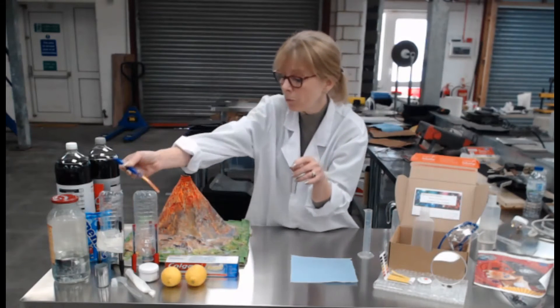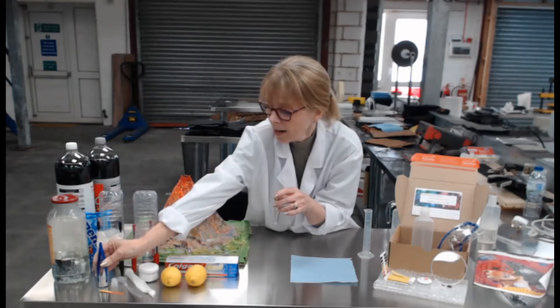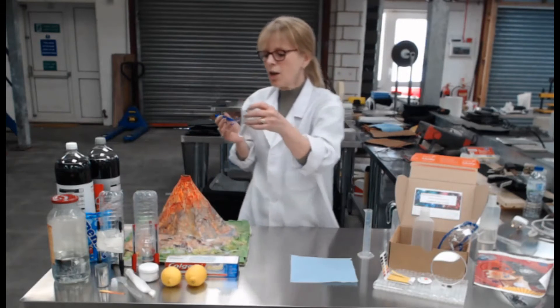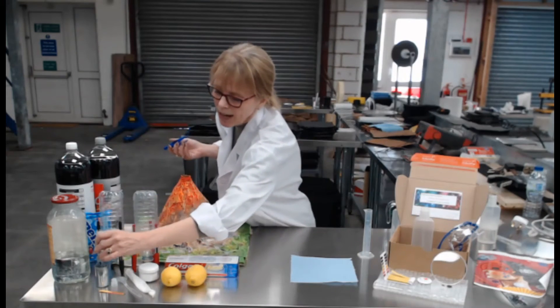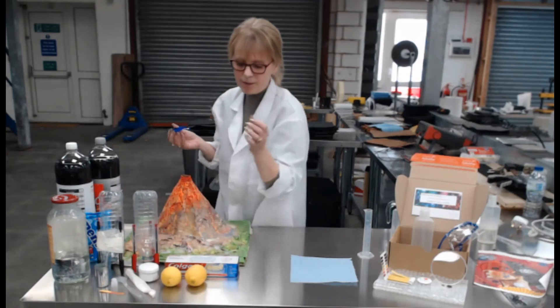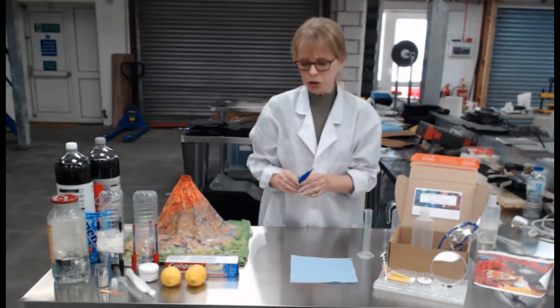And you could test and experiment with which things are going to have a lower pH, or you could look to see if they're alkali where it would be above seven. Seven is neutral and is what your water should be.